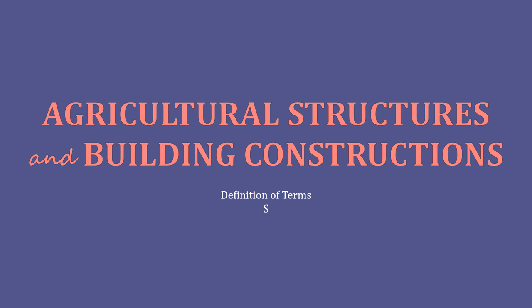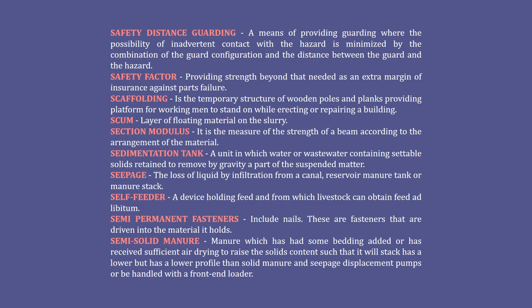Hello and welcome back again, coffee beans. This is Agricultural Structures and Building Constructions — Definition of Terms. Safety distance guarding: the means of providing guarding where the possibility of inadvertent contact with the hazard is minimized by the combination of the guard configuration and the distance between the guard and the hazard. Safety factor: providing strength beyond that needed as an extra margin of insurance against parts failure.